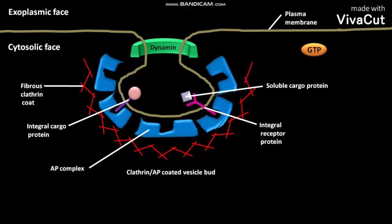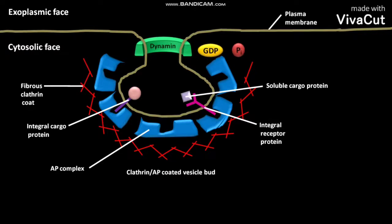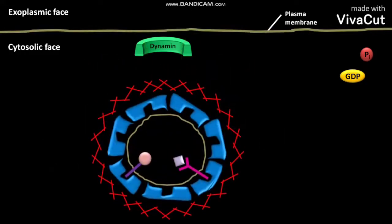Cytosolic GTP then binds with the dynamin. The dynamin-bound GTP undergoes hydrolysis to produce GDP and Pi. The energy derived from this GTP hydrolysis causes a conformational change in dynamin. In its changed conformation, dynamin stretches the neck of the clathrin epi-coated vesicle bud, and as a result the vesicle pinches off and is released into the cytosol.